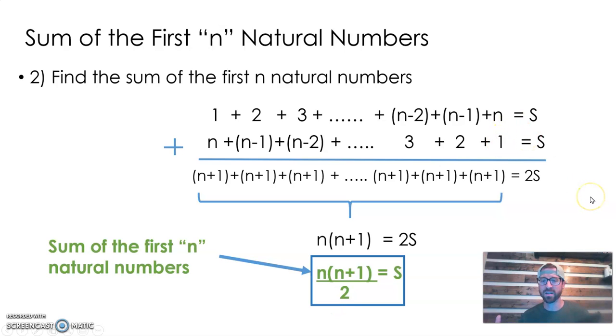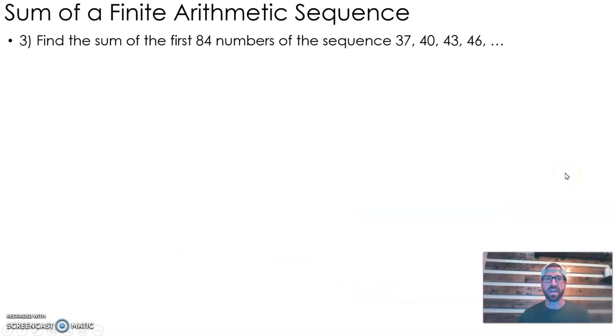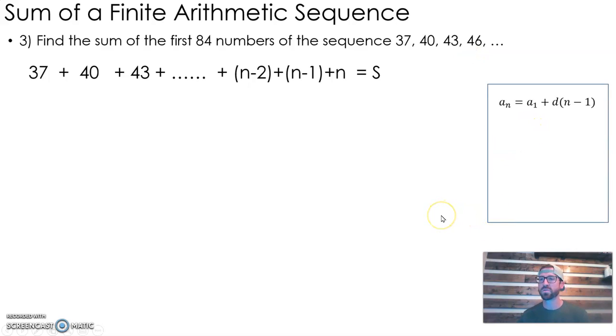Now let's take this and generalize even further. Can we use the same relationship to find the first so many numbers of a sequence that's not just natural numbers, but an actual arithmetic sequence? Here we have an arithmetic sequence going up by 3 every time. Could we use the same reasoning to derive a rule for adding the first 84 terms?